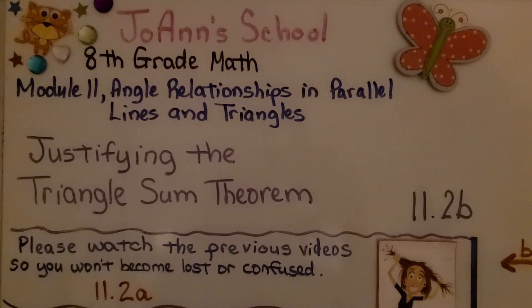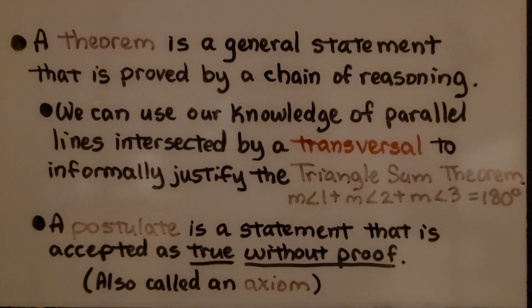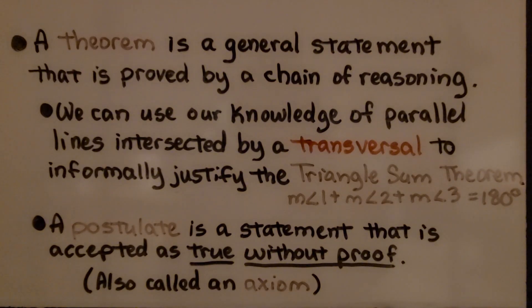Justifying the Triangle Sum Theorem, Lesson 11.2b. A theorem is a general statement that is proved by a chain of reasoning. We can use our knowledge of parallel lines intersected by a transversal to informally justify the Triangle Sum Theorem.